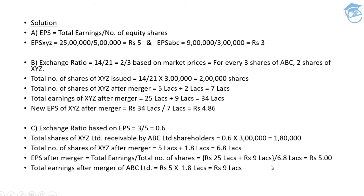This was the question asked in the CA Final examination for November 2008 and November 2010. Talking about the second part, the total earnings of 34 lakhs divided by updated shares of 7 lakh gives an EPS of 4.86. This is one of the hot short questions primarily asked in almost every CA Final examination on mergers and acquisitions — the figures change but the concept always remains the same. Mark my words: anything from mergers and acquisitions will revolve around this type of question.